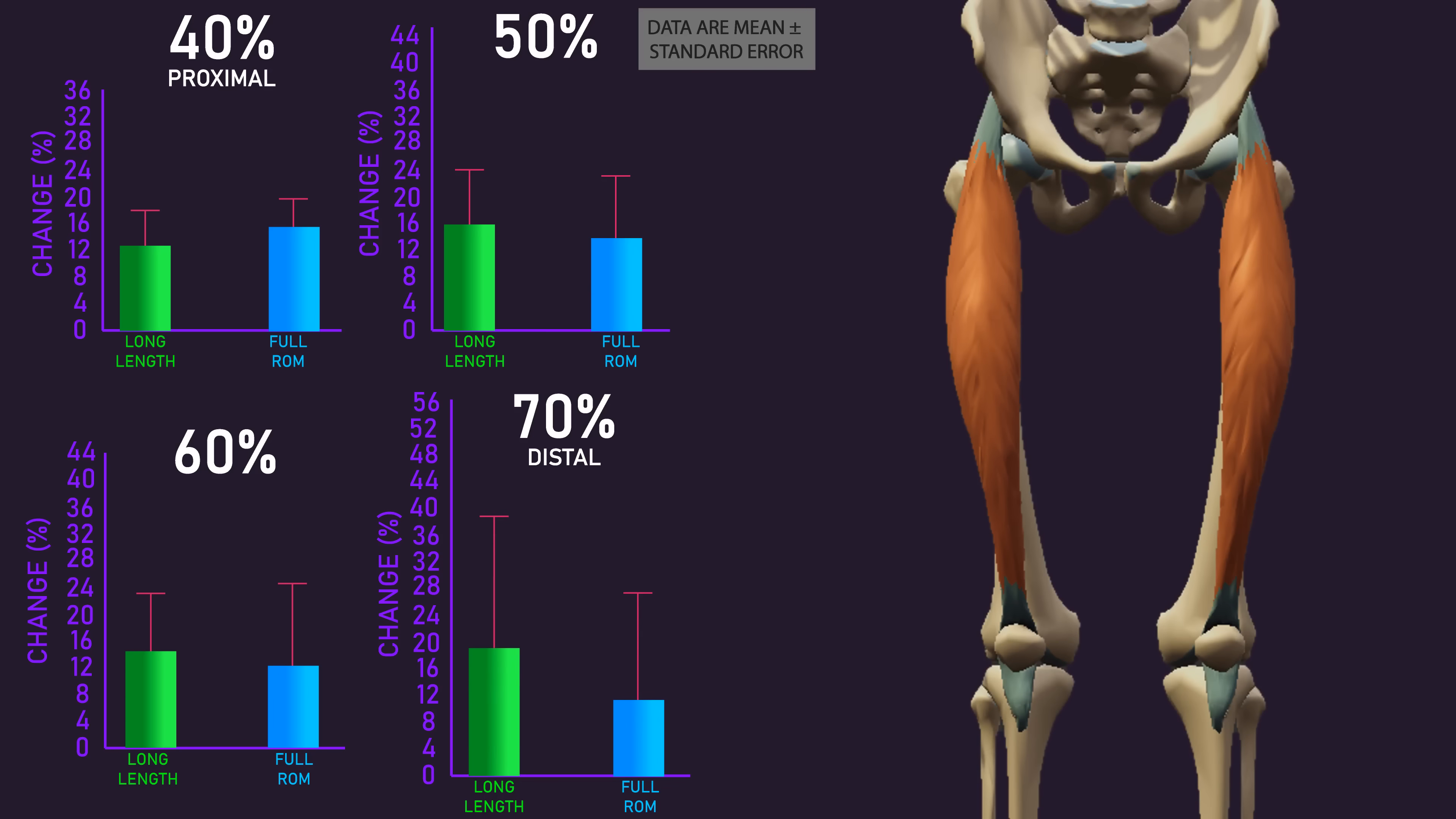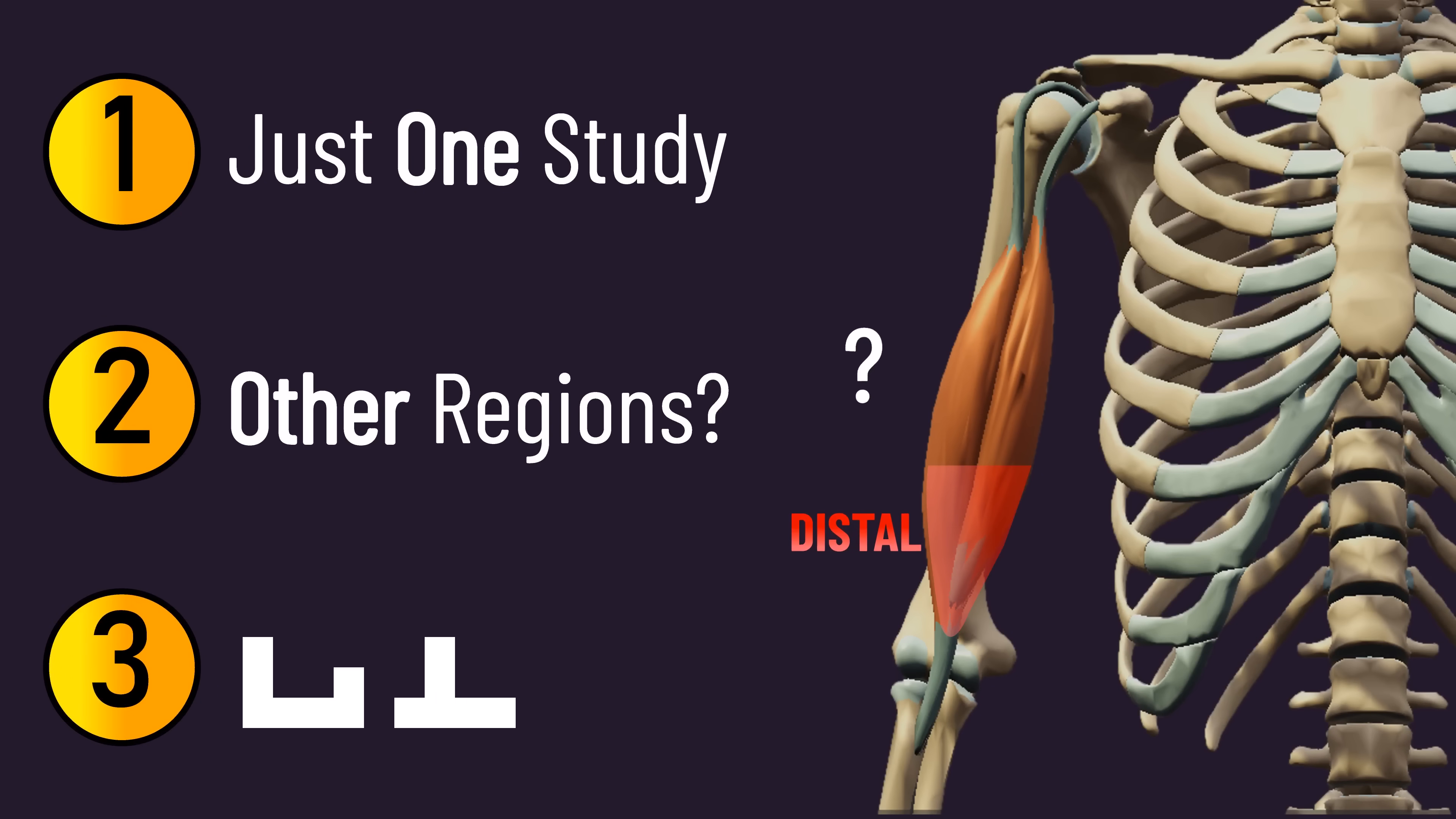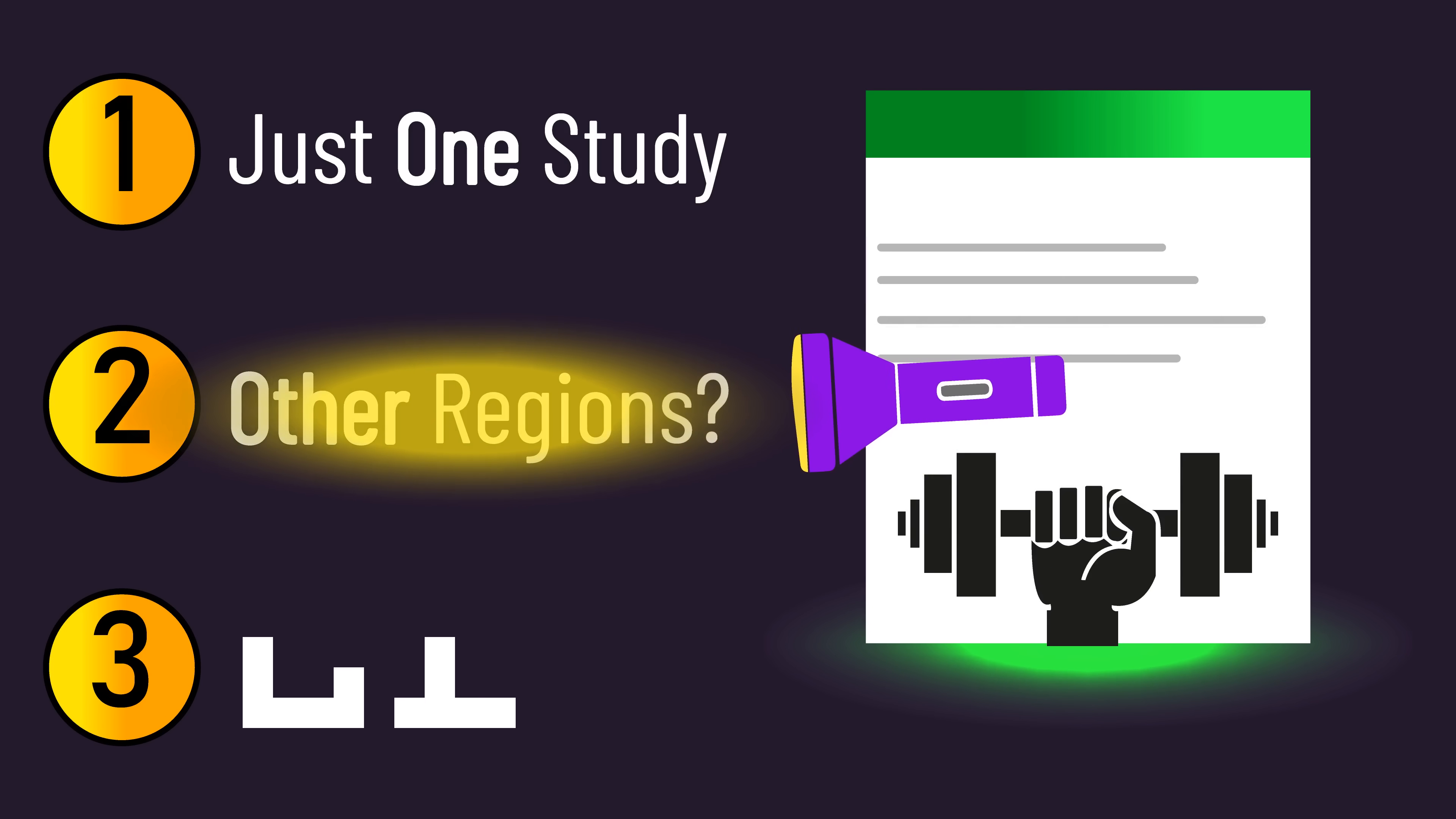Growth of the rectus femoris tended to be better for the partials at long lengths across all regions, but the differences were large at the 70 percent region. Accordingly, we can't be certain distal region growth of the elbow flexors and triceps was identical between both, hopefully future studies can shed more light onto this.